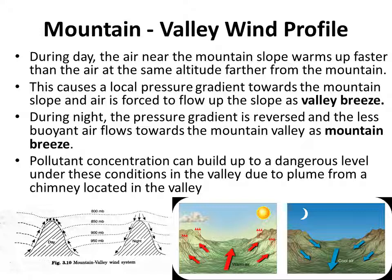During night, the pressure gradient is reversed and the less buoyant air flows towards the mountain valley as mountain breeze. The pollutant concentration can build up to a dangerous level under these conditions in the valley — if there is an industry located in the valley, the plume from its chimney will move as warm air uphill during daytime, and during nighttime the same pollutant may move down as cool air, remaining concentrated in the valley. This can cause serious pollution problems.